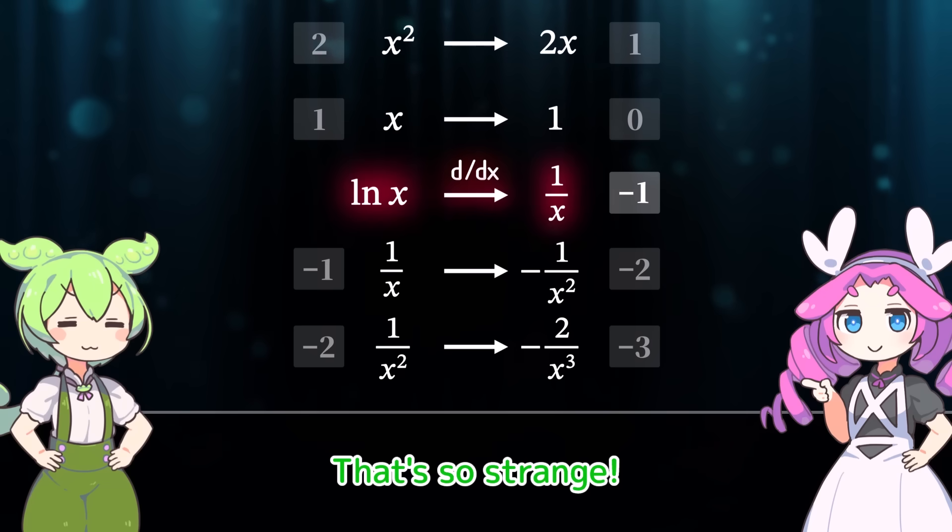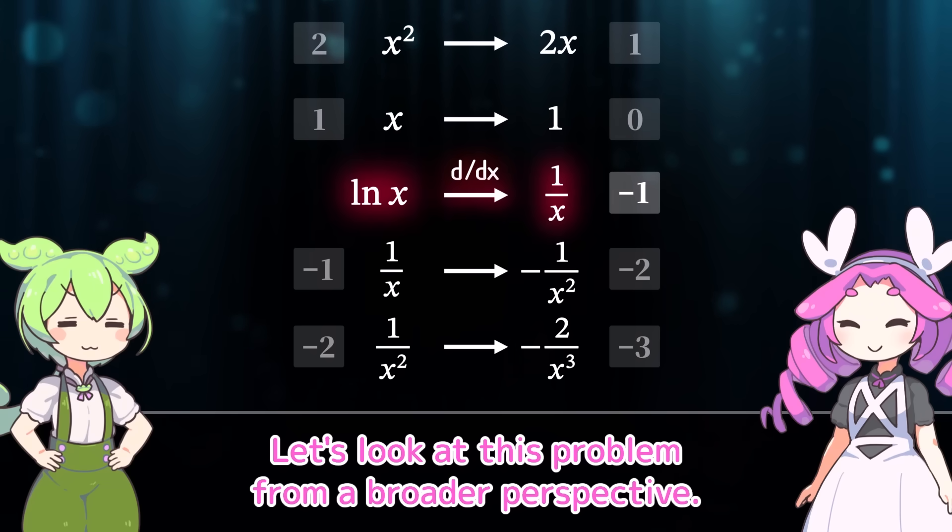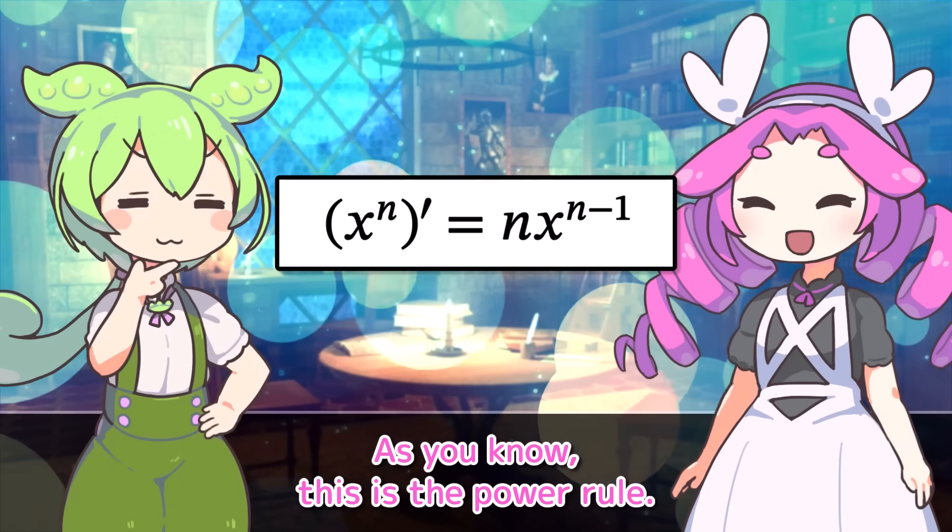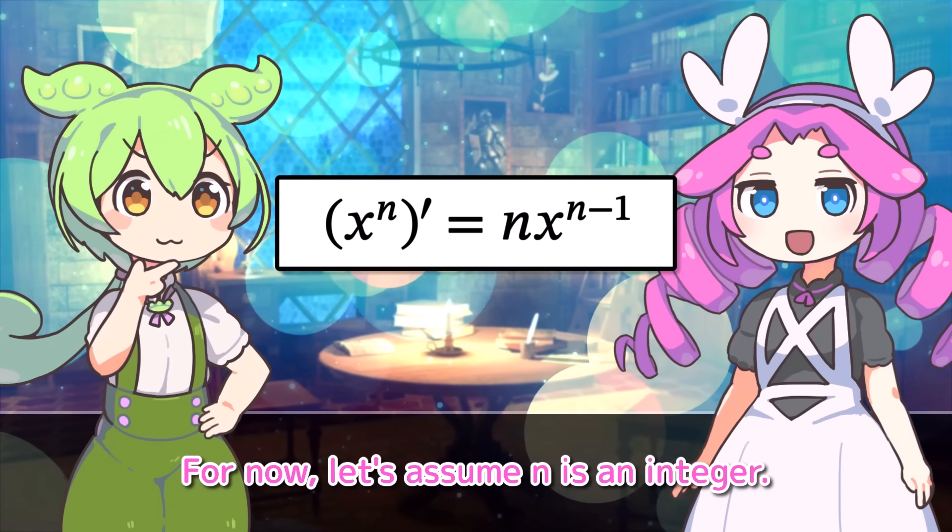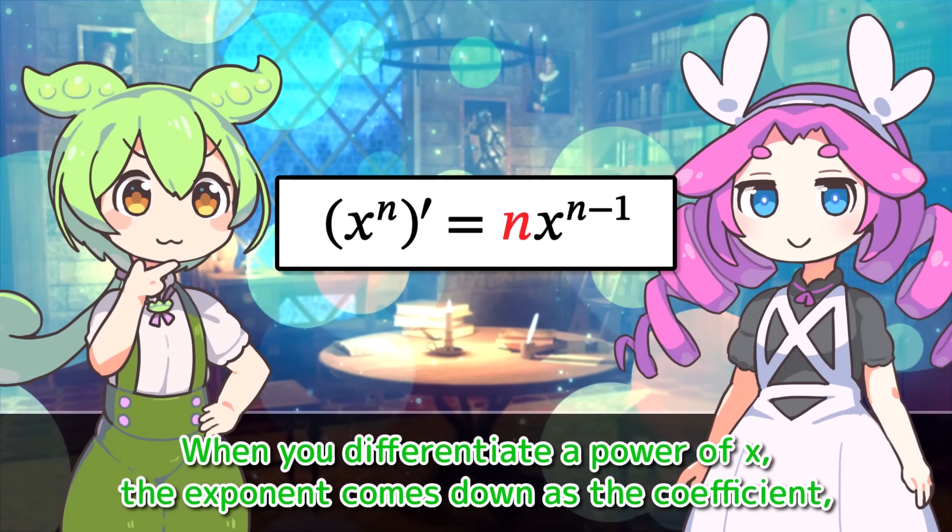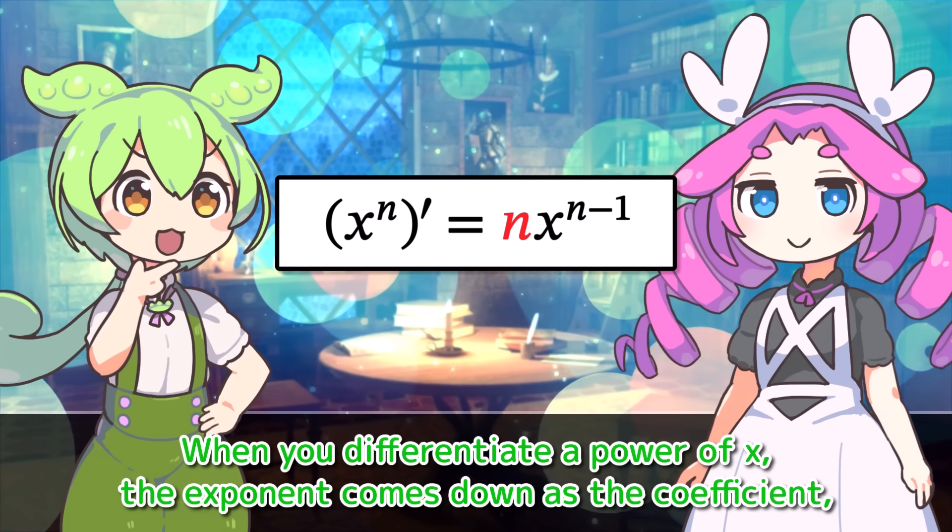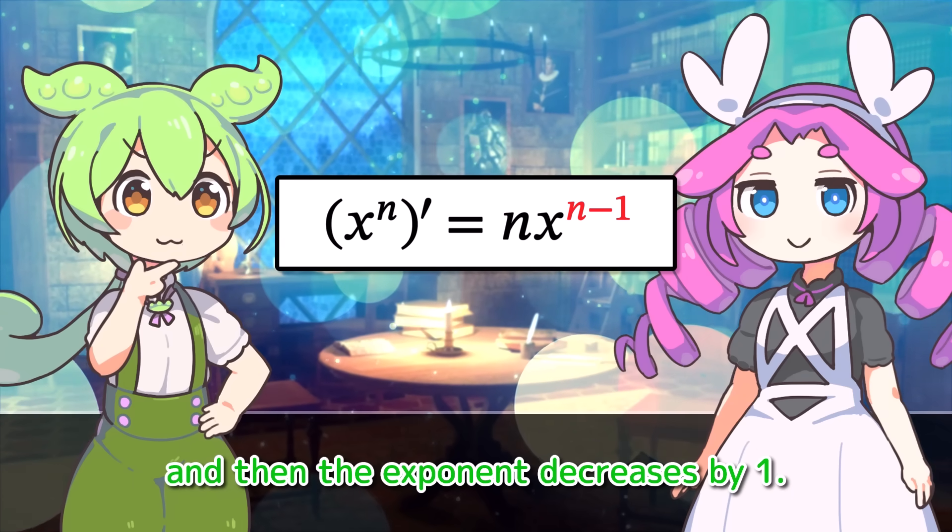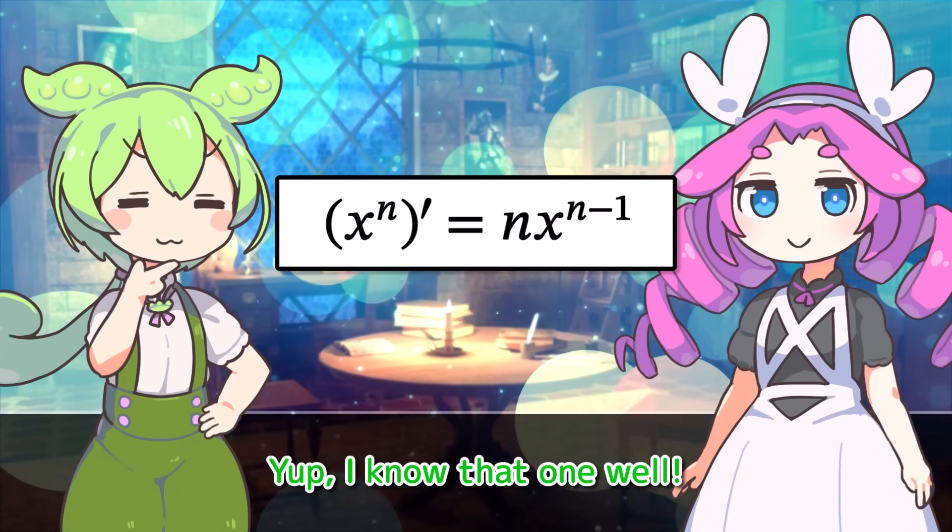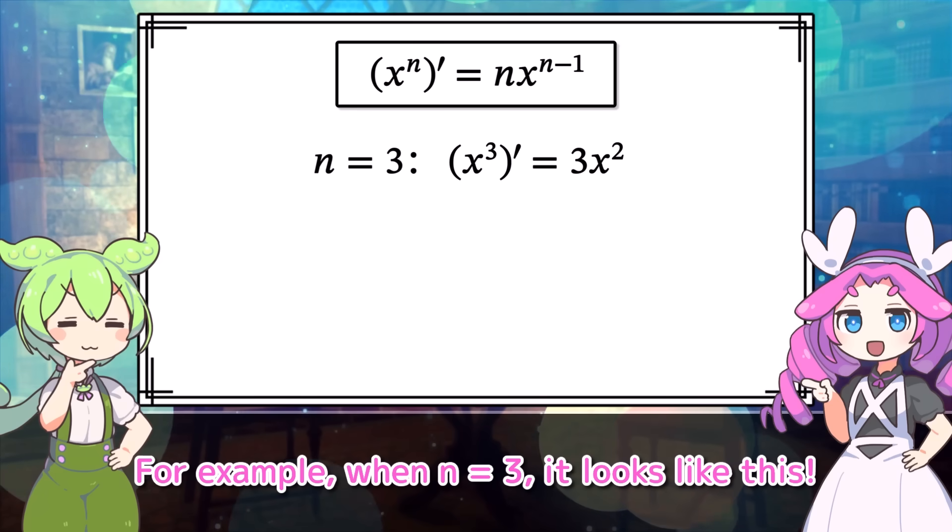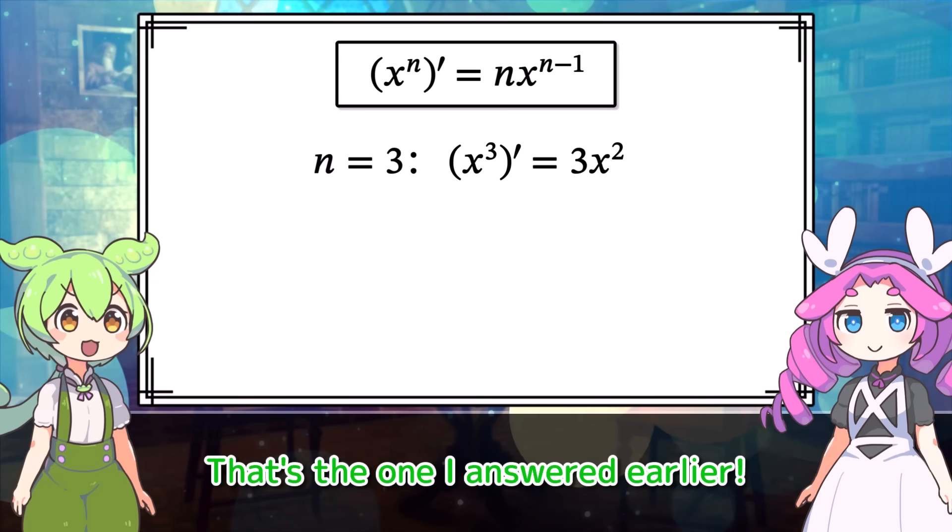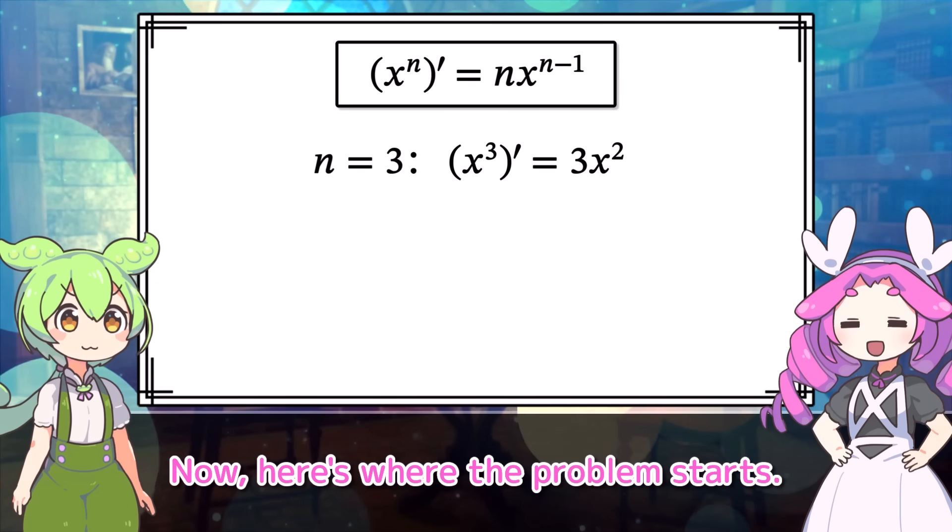That's so strange. Let's look at this problem from a broader perspective. Come over here. As you know, this is the power rule. For now, let's assume n is an integer. When you differentiate a power of x, the exponent comes down as the coefficient. And then the exponent decreases by 1. Yup, I know that one well. For example, when n equals 3, it looks like this. Differentiating x cubed gives 3x squared. That's the one I answered earlier.